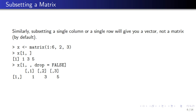Also, when you subset a single column or a single row, by default you don't get a matrix back. For example, if I subset out the first row, you might think you'd get a one-by-three matrix with one row and three columns and elements 1, 3, 5 — but that's not what you get. What you get back is a vector with elements 1, 3, 5. Usually this is what you want, but if it's not, you can set drop=FALSE when you subset the matrix, and then you get a one-by-three matrix with elements 1, 3, and 5.